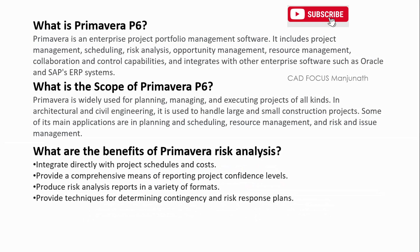The scope of Primavera P6 covers planning, managing, and executing projects of all kinds — in architecture, civil engineering, or IT fields. It is used to handle both large and small construction projects. Its main applicable areas are planning and scheduling, resource management, and risk and issue management.